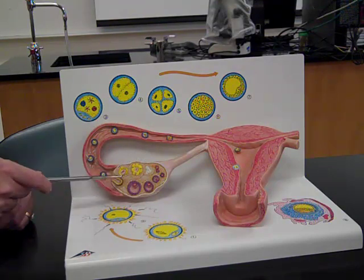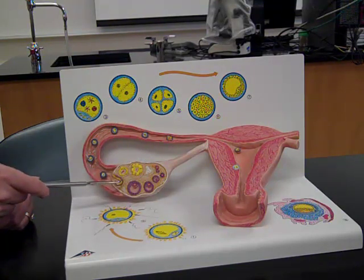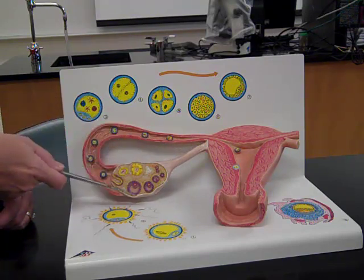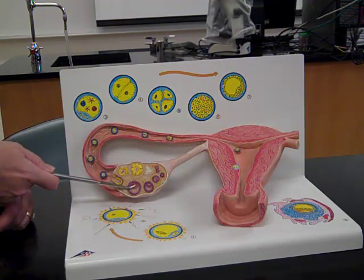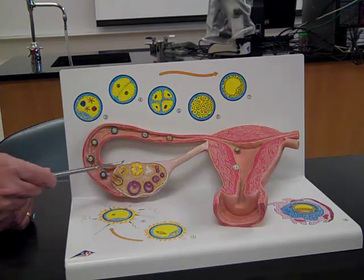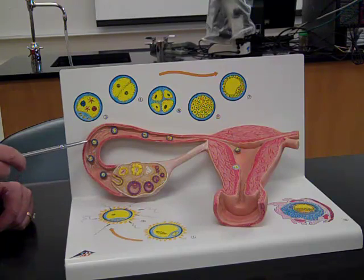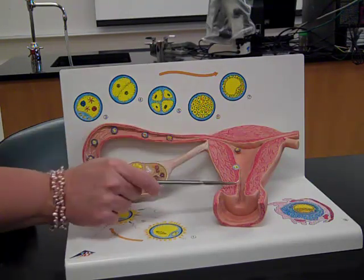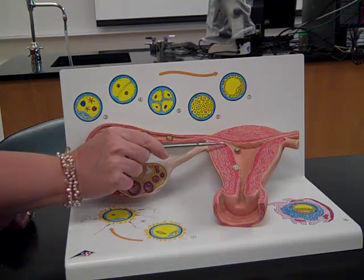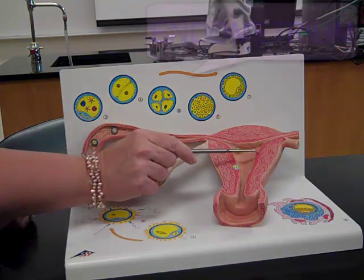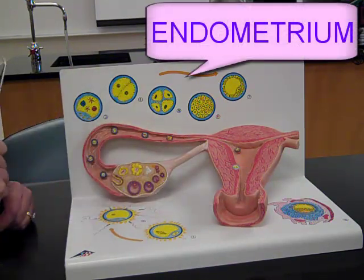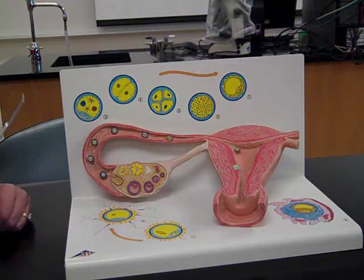The ovary is held in position by a suspensory ligament — that structure is holding the ovary in position. The ovary produces an egg. The egg is going to travel through the oviduct or the fallopian tube into the muscular uterus. The lining of the uterus, the very inner tissue, is the endometrial tissue — that's the tissue that's lost on a cyclical basis during menstruation.